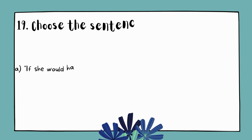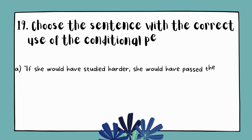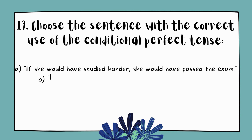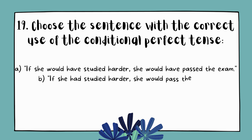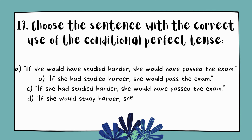Question 19. Choose the sentence with the correct use of the conditional perfect tense. A. If she would have studied harder, she would have passed the exam. B. If she had studied harder, she would pass the exam. C. If she had studied harder, she would have passed the exam. D. If she would study harder, she would have passed the exam.